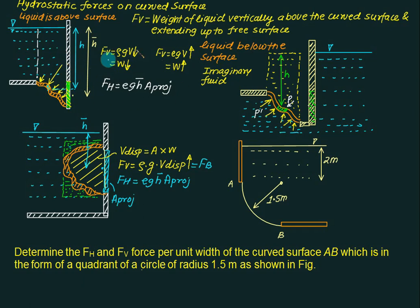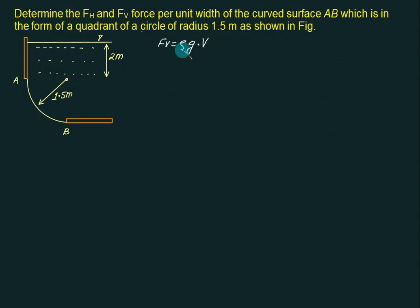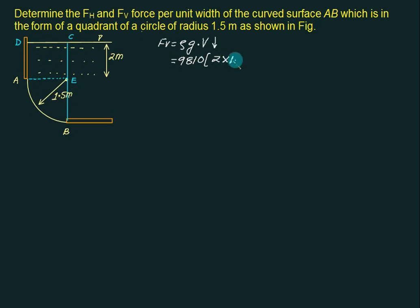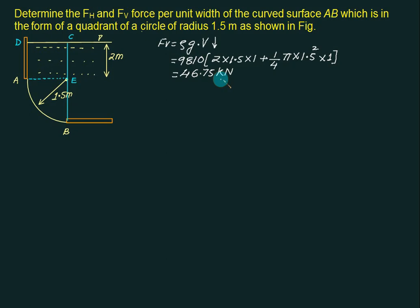Using situation number 1, FV equals rho times g times V — the volume above the gate AB. Since water is really present, the force will be acting downward. The volume consists of two areas: rectangle ADCE (2 meter by 1.5 meter, width 1) plus a quarter circle (1/4 × π × 1.5² × width 1). So FV equals 46.75 kilonewton.